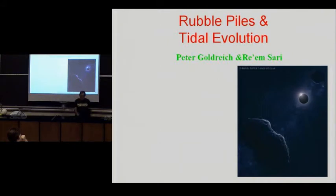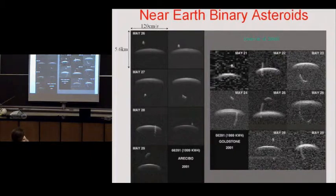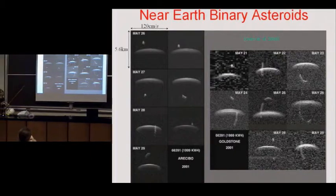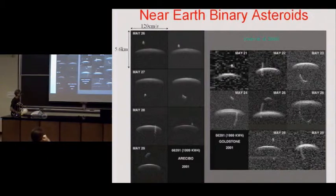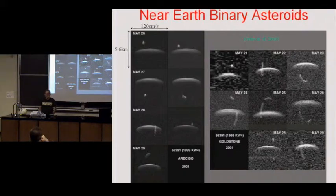Maybe you'll get a little bit more detail too. This work I did with Ray Amsari. This is one of the ways we know about near-Earth asteroids. These are radar images made by a group at JPL, led by Steve Astro. These are recent. The way these work is you shine a radar on these asteroids and you receive the return signal.